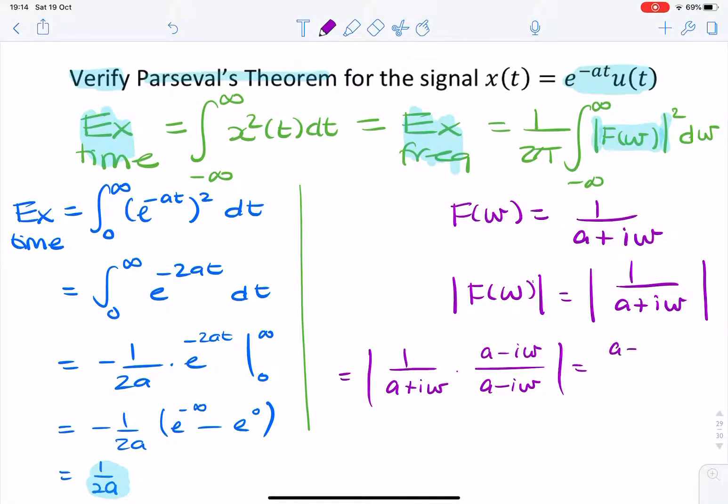And that gives you a minus i omega divided by a squared plus omega squared.